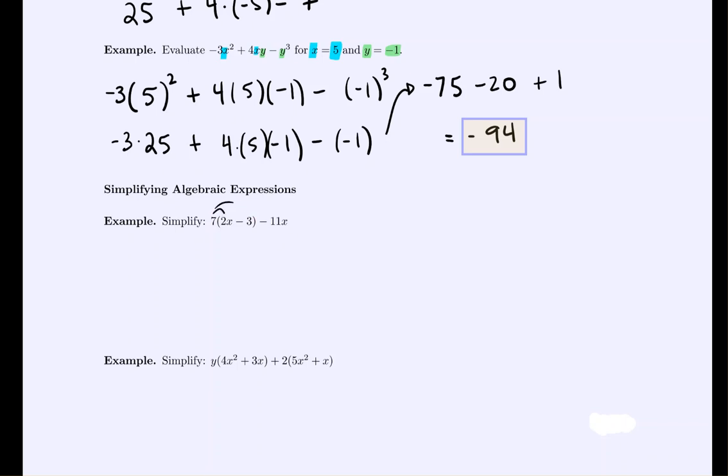I'm first going to distribute and multiply. So 7 times 2x would give me 14x. 7 times negative 3 is a minus 21. We were subtracting 11x. Now we can group like things. If you have 14x and you're subtracting 11x, that would just leave you with 3x minus 21. And that's our simplified expression because the x and the 21 term cannot combine any further because they're different things.